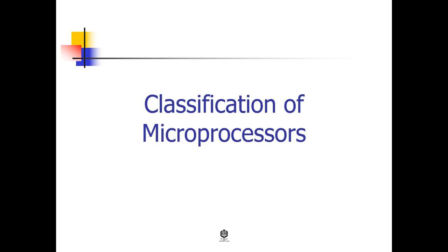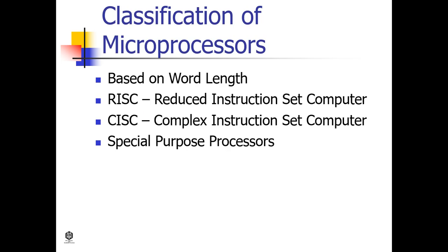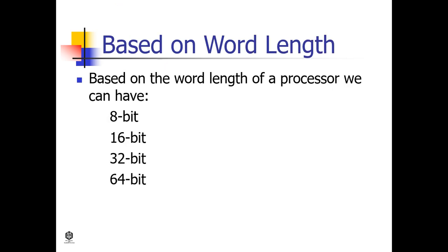Let's proceed to the classification of microprocessors. Based on word length: RISC (reduced instruction set computer), CISC (complex instruction set computer), and special purpose processors. Based on the word length of a processor, we can have 8-bit, 16-bit, 32-bit, and 64-bit processors.